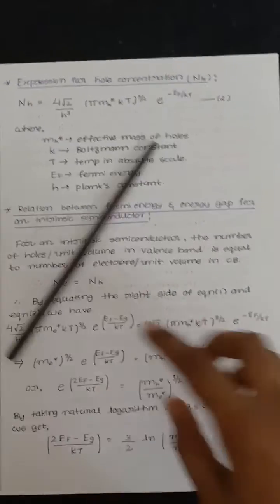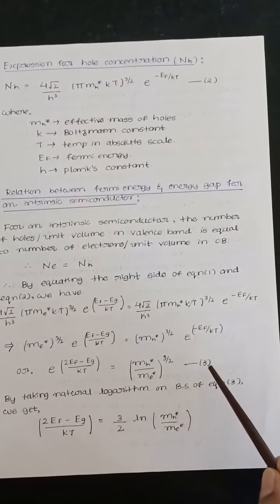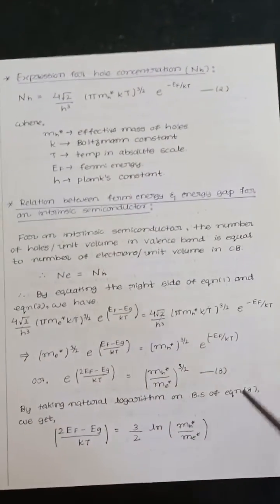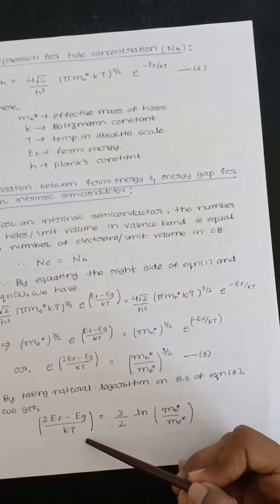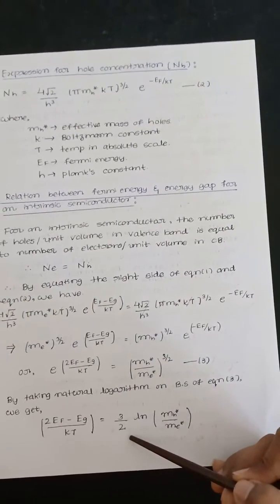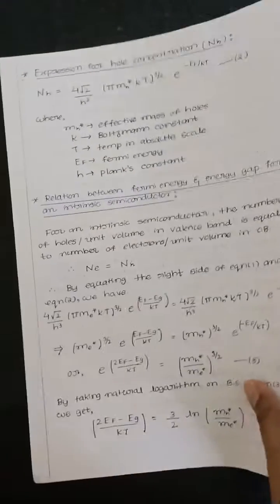Now by taking natural logarithm on both sides of equation 3, it will become 2 into (EF minus EG)/KT equals 3/2 ln of MH star divided by Me star.